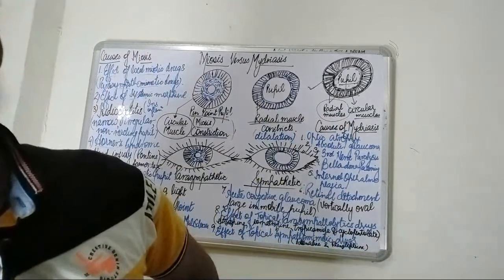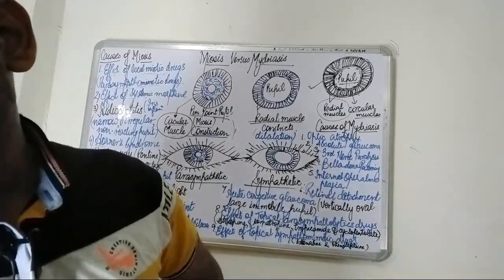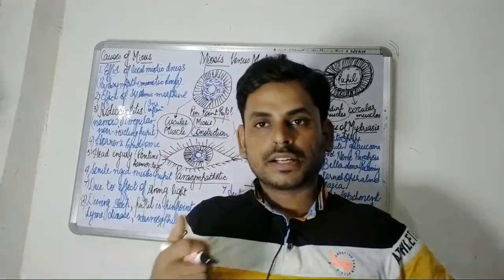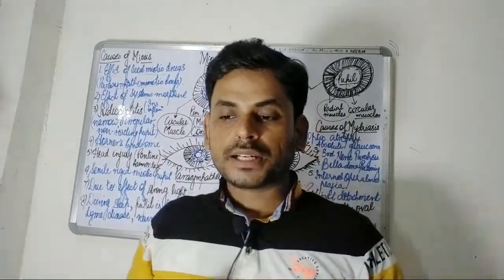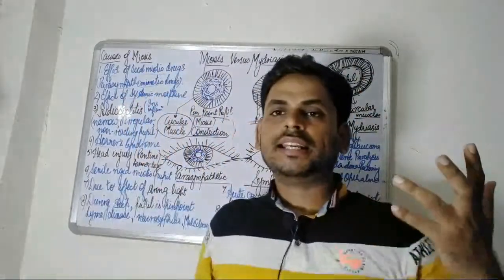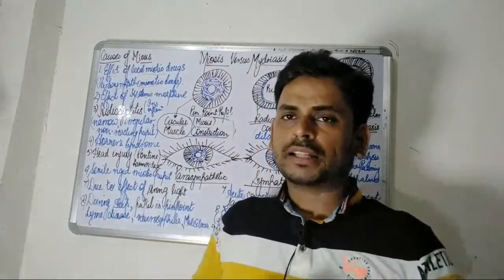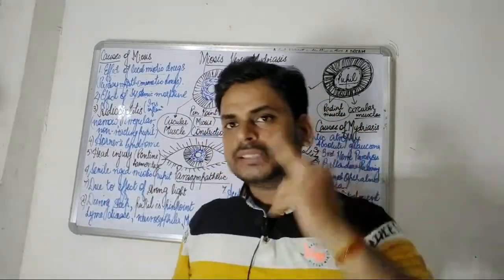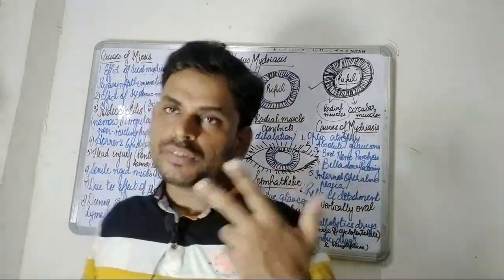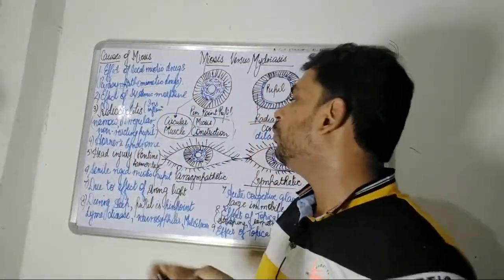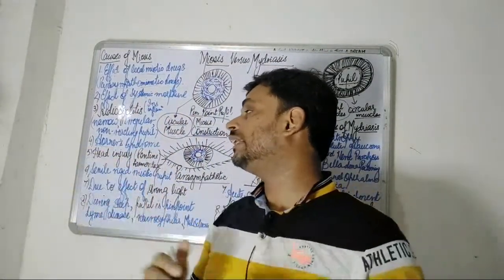The fourth cause is Horner syndrome. Horner syndrome involves a disrupted nerve pathway on one side of the brain to the face and eye. During Horner syndrome, the disruptive nerve pathway from one side of the face and eye is involved, and in this condition the process of miosis can be seen.